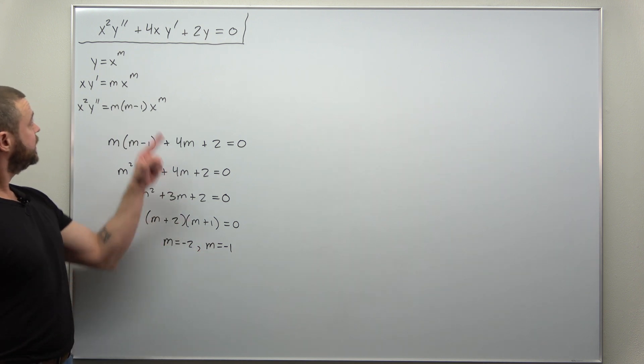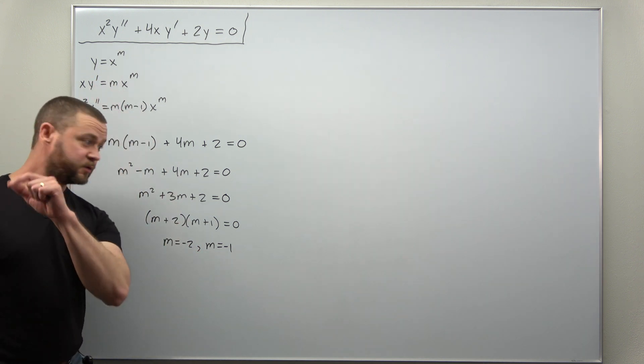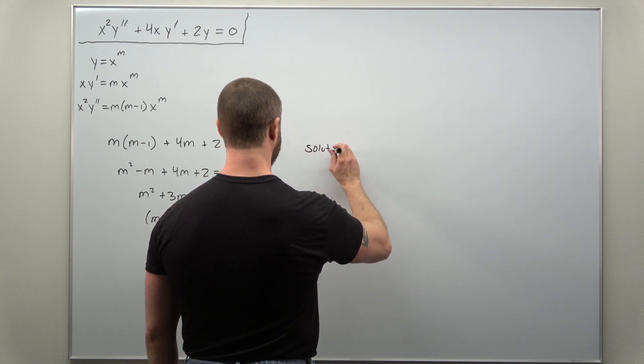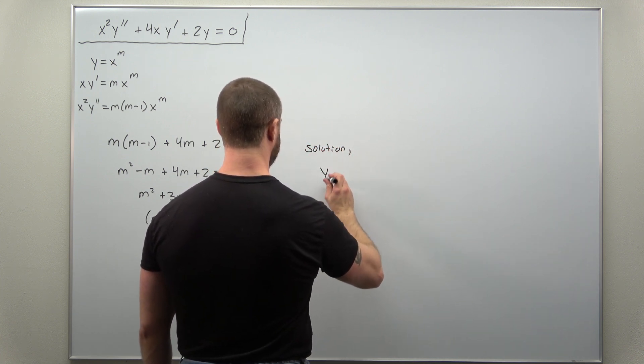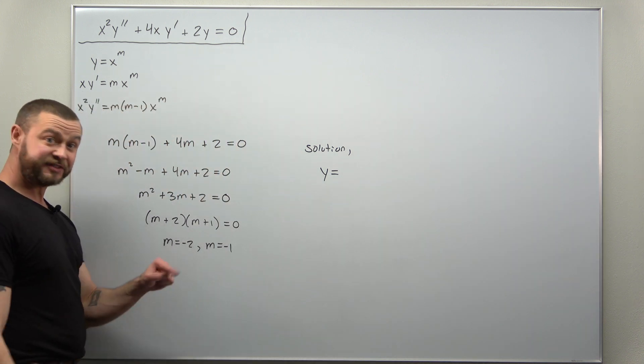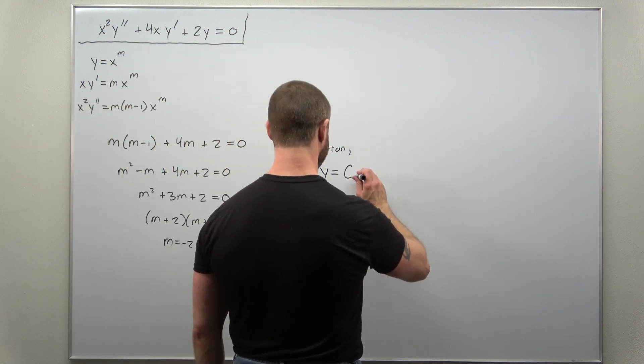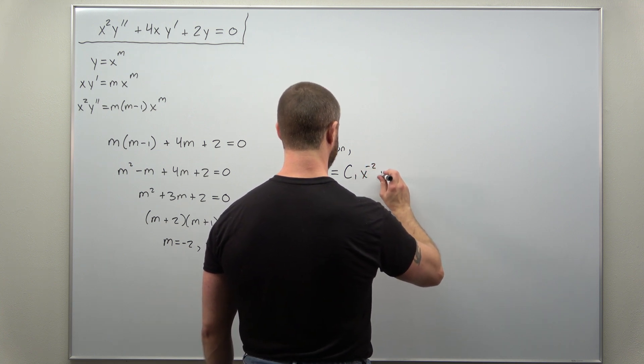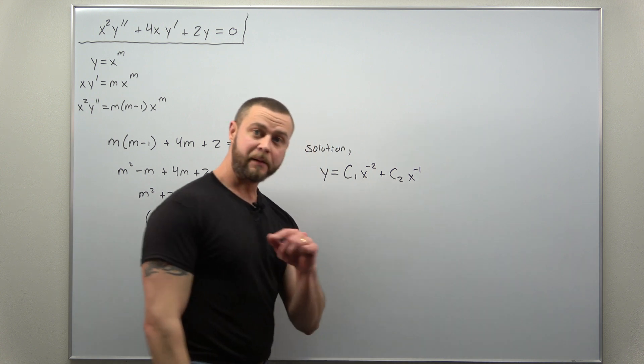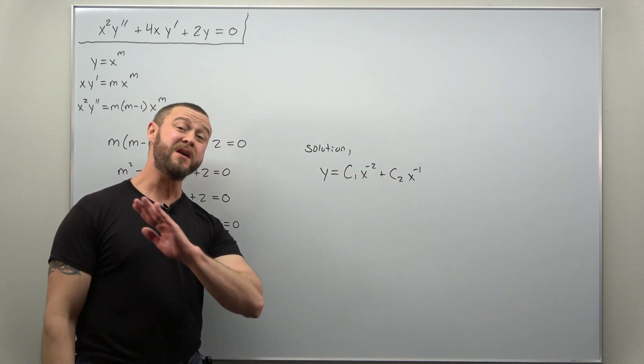Each value of m gives you a solution, so let's go ahead and write it down. We'll get a constant c1 times x to the negative 2, and then another constant c2 times x to the negative 1, and we are done.